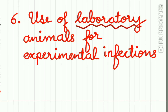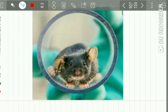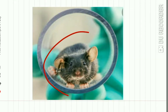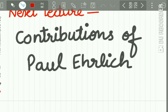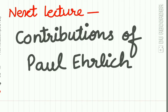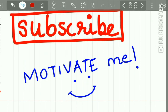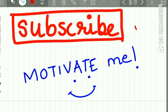Lastly, he described the use of laboratory animals for experimental infections. Laboratory animals were introduced by Robert Koch to produce experimental infections and study disease. The next lecture will be on the contributions of Paul Ehrlich.